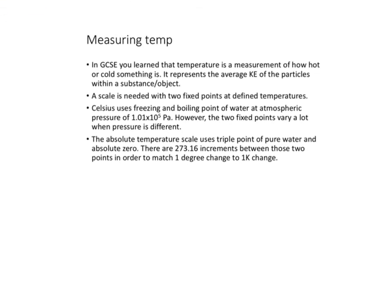Firstly, I will talk about measuring the temperature — that was the third learning objective. In GCSEs, you learned that temperature is a measurement of how hot or cold something is. Every time we need to make a measurement, even on the Celsius scale, we need two fixed points at very well-defined temperatures to get a good scale. We can't just arbitrarily split zero to 100 degrees into 100 increments. What Celsius actually does is use the freezing and boiling point of water at a specific atmospheric pressure.